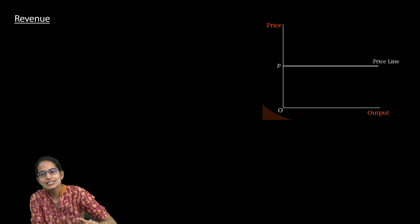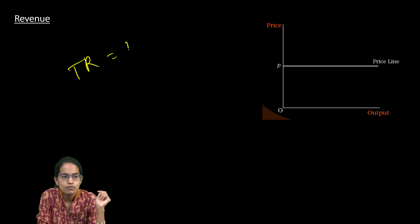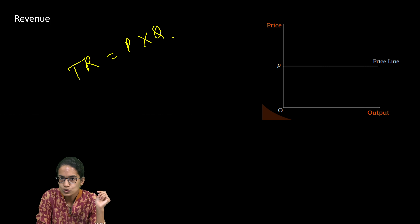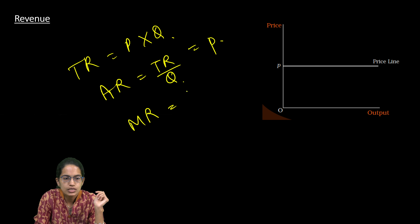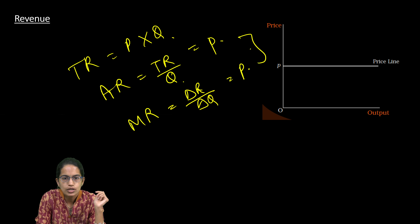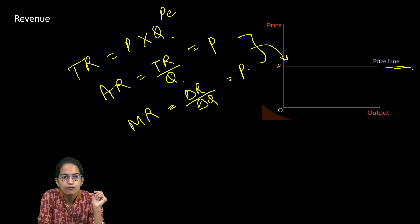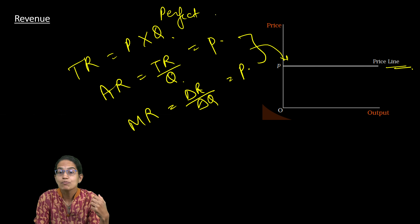To recap: total revenue is price multiplied by quantity. Average revenue is total revenue divided by quantity, which equals the price. Marginal revenue is the change in revenue divided by change in quantity, which also equals the price. Both average revenue and marginal revenue are perfectly elastic and equal to the price line in a perfectly competitive market. In the next section, we will understand profit maximization in the short run and long run.